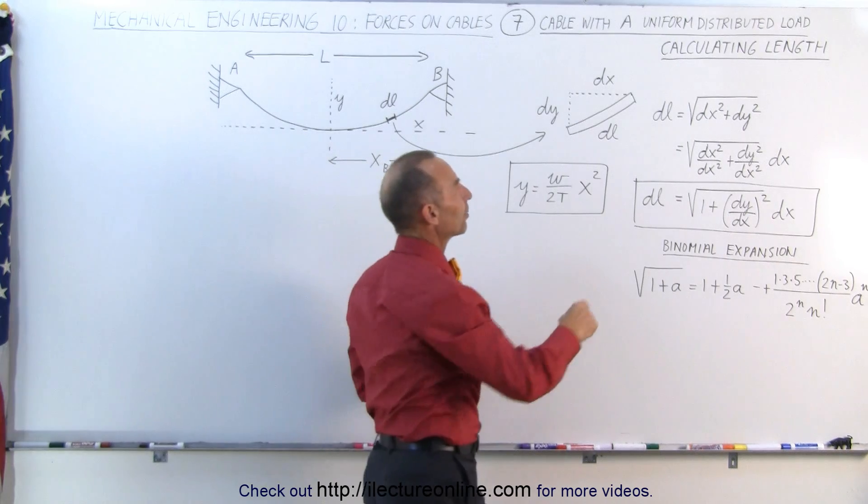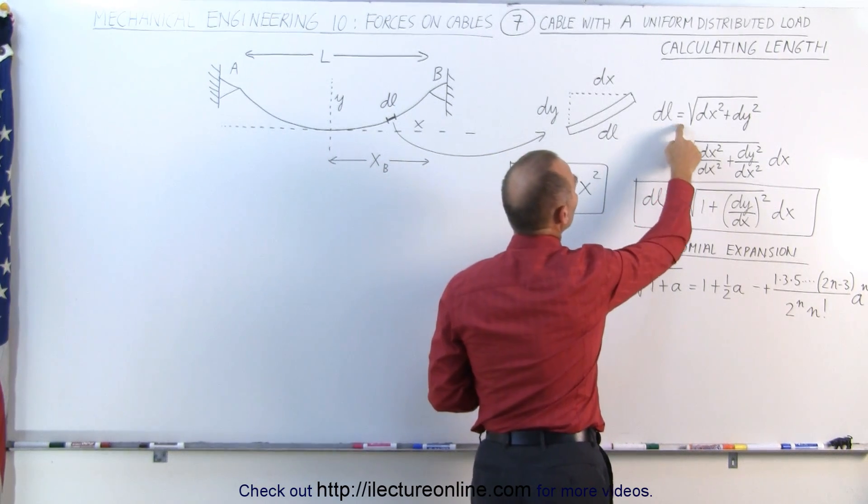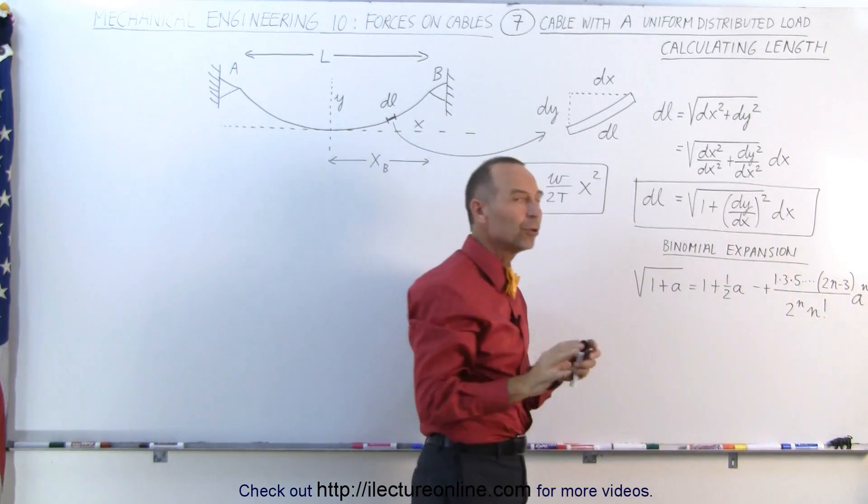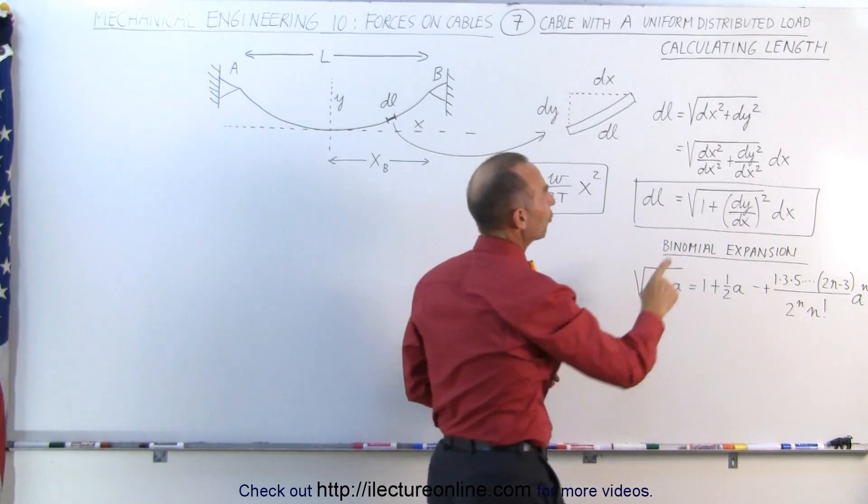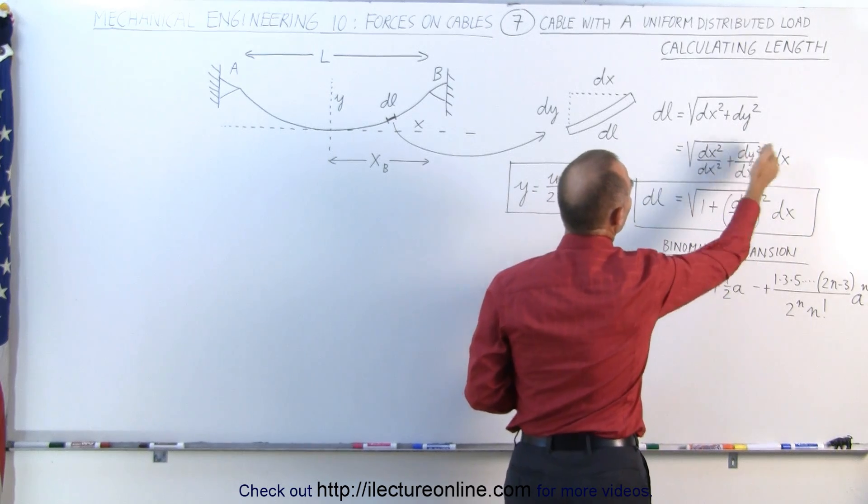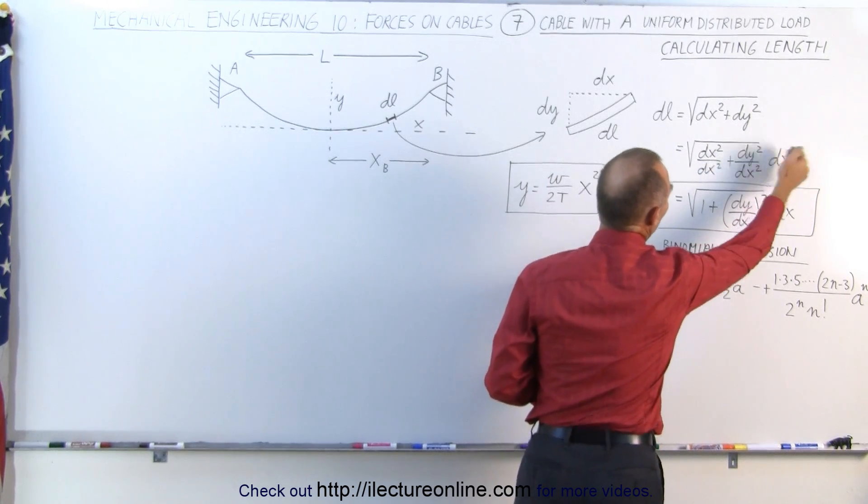We can then see that using Pythagorean theorem, DL is equal to the square root of DX squared plus DY squared. And with a few little mathematical tricks, first of all by dividing both of these by DX squared and then multiplying times the DX squared pulled out of the radicals there,